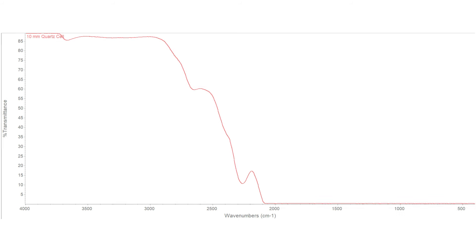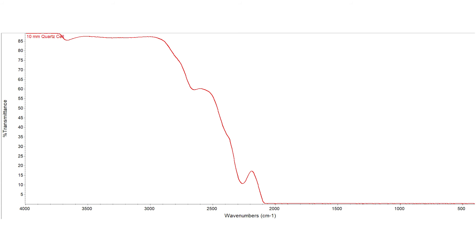These cells will cut off at about 2200 wavenumber, but you have that whole CH stretch region that you can use for your quantitative method.